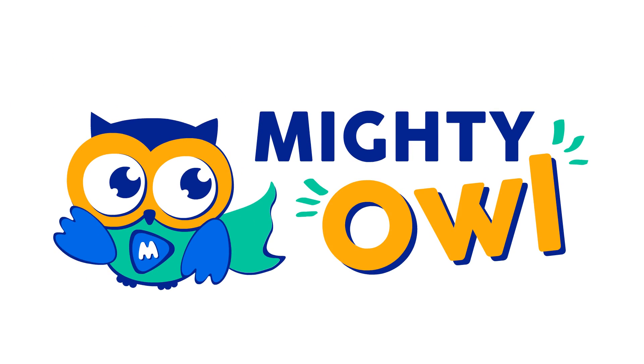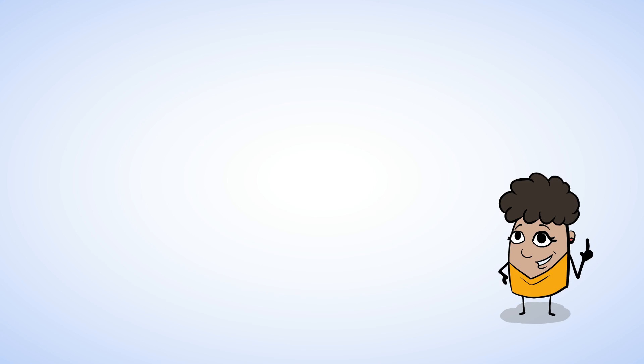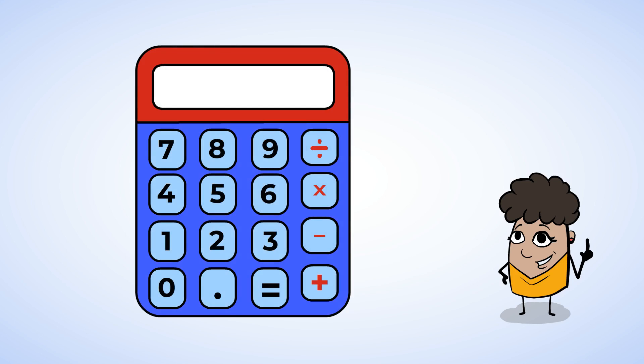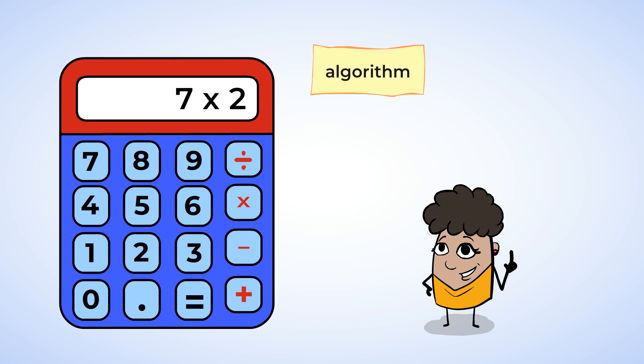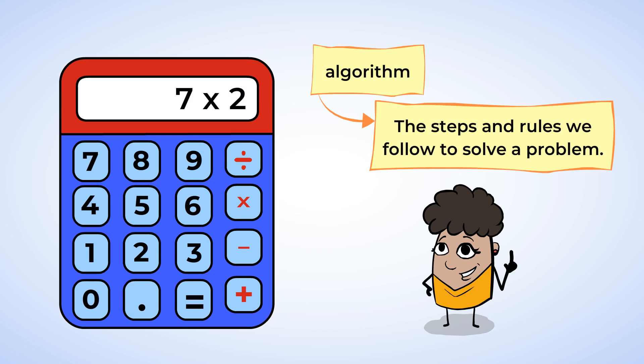Hello, this is MightyOwl. Before we start learning new math lessons, let's buff up on our current skills. Let's start with the standard algorithms for addition and subtraction, and then we can move on to multiplication. Remember, an algorithm is the steps and rules we follow to solve a problem. You've already learned many different strategies to help with adding and subtracting numbers.